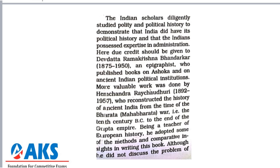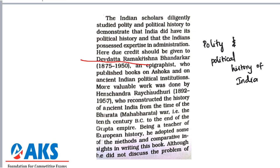All this shows how Indian scholars were diligently studying the polity and political history of India to demonstrate that India did have a political history and that Indians also possessed expertise in administration. In this context, credit must be given to Devadatta Ramakrishna Bhandarkar — son of RG Bhandarkar. He was an epigraphist who published books on Ashoka and on ancient Indian political institutions, covering Ashoka's reforms and his administration extending to the northwestern parts of India.